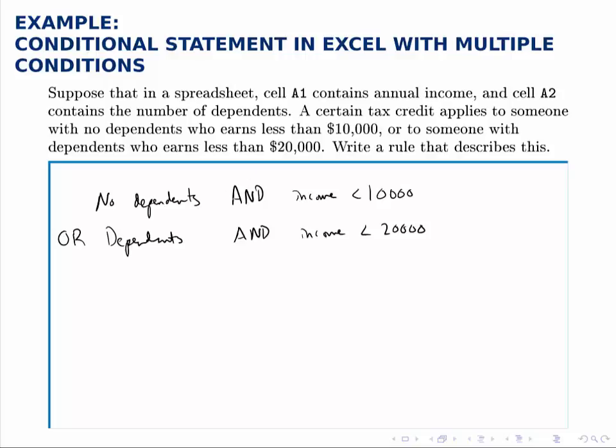A statement with AND like this in Excel you write with the function AND, and then in parentheses you put the two conditions. No dependents—remember cell A2 contains the number of dependents—so no dependents would be A2 equals 0, and their income less than $10,000. Income is stored in cell A1, so A1 less than $10,000. That's the first AND statement.